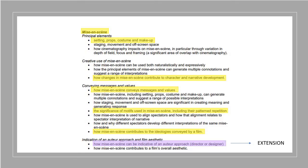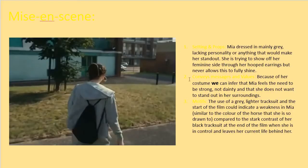Mise-en-scène. Key things to focus on: setting, props, costumes and make-up, how changes in mise-en-scène contribute to character and narrative development, how mise-en-scène conveys messages and values, the significance of motifs and their patterned repetition, how mise-en-scène contributes to the ideologies within the film, and — if you can — link the mise-en-scène to Arnold's auteur approach. Here I only managed to get three points. Setting and props: Mia's dressed in mainly grey — it lacks personality or anything that would make her stand out.